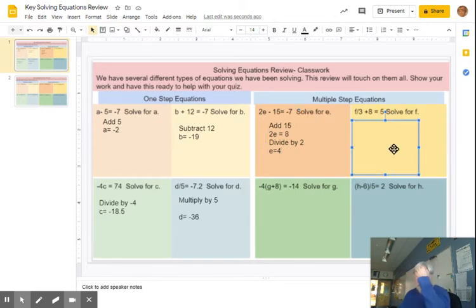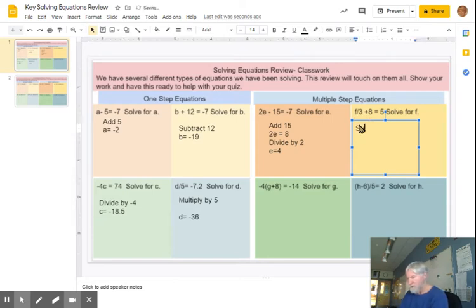So same thing over here. Get rid of your constant term first. And then this time multiply by 3. So let's subtract 8. 5 minus 8. And that gives me F over 3 equal to 5 minus 8, it's going to be negative 3. And then I'm going to multiply by 3, undo the dividing. That gives my F equal to negative 9. Right? So negative 9 divided by 3 is going to be negative 3 plus 8. That's how I get 5.